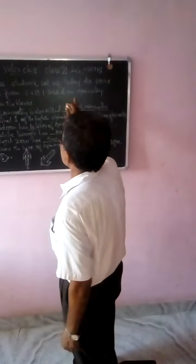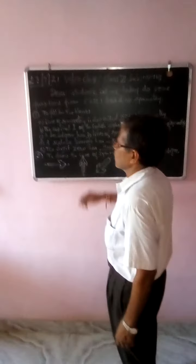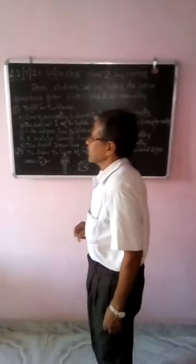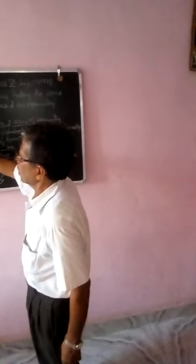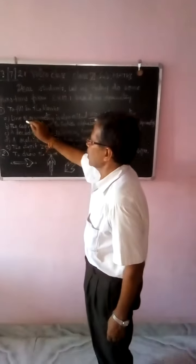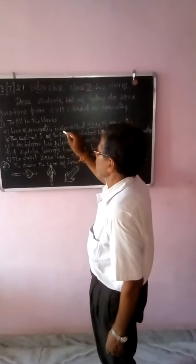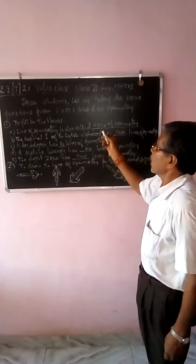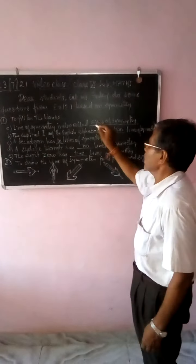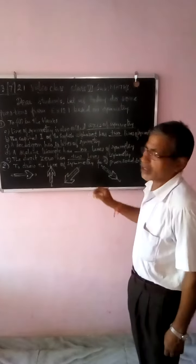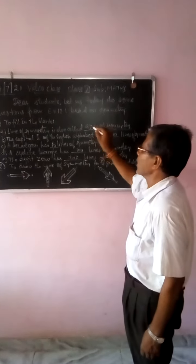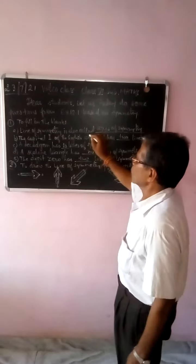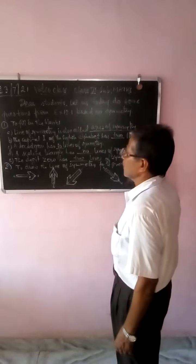So let us today revise Exercise 12.1. The first question is to fill in the blanks. First part: a line of symmetry is also called — it is to be filled in the blanks. Here you will put 'axis of symmetry.' Line of symmetry is also called axis of symmetry.